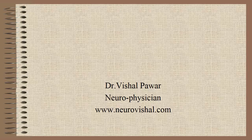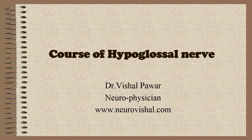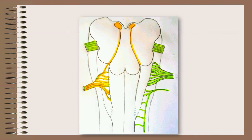In this video, I am going to discuss about the cores of the hypoglossal nerve. The hypoglossal nerve is a purely motor nerve supplying the tongue. Its cells of origin are in the hypoglossal nuclei.